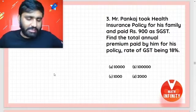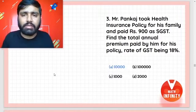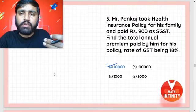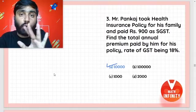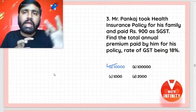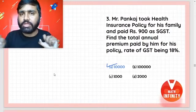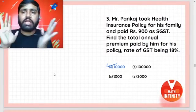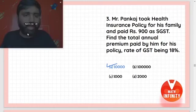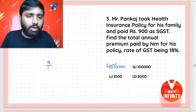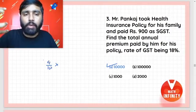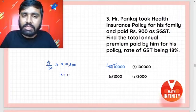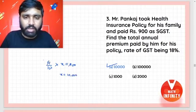Yes, that's how it happened. The correct answer was ₹10,000. Mr. Pankaj took a health insurance policy and paid ₹900 as SGST, with total GST at 18%, meaning SGST is 9%. So 9 upon 100 into X equals 900, and the X value — the policy amount — works out to ₹10,000. It's very simple.